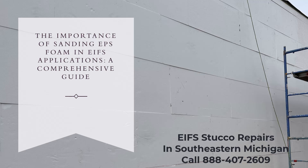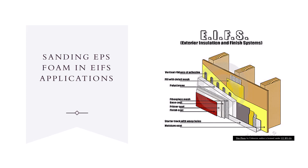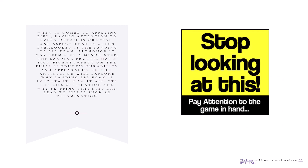When it comes to applying EIFS — exterior insulation and finish system — paying attention to every detail is crucial. One aspect that is often overlooked is the sanding of EPS, expanded polystyrene foam. Although it may seem like a minor step, the sanding process has a significant impact on the final product's durability and appearance. We will explore why sanding EPS foam is important, how it affects the EIFS application, and why skipping this step can lead to issues such as delamination.